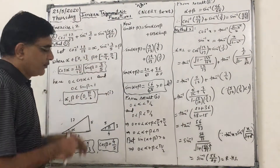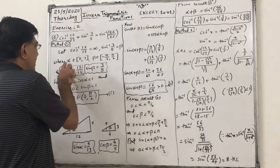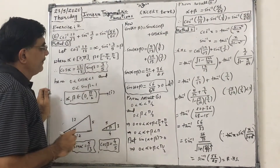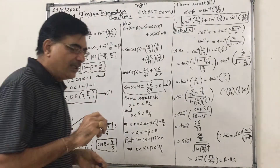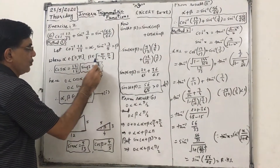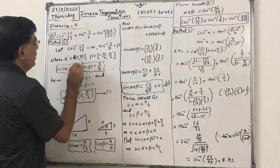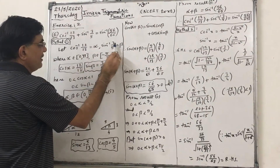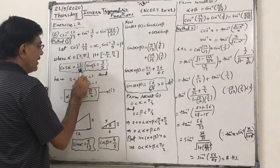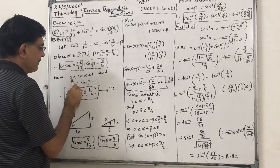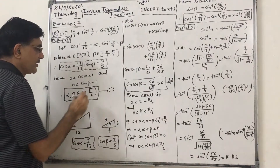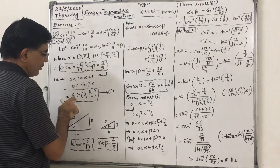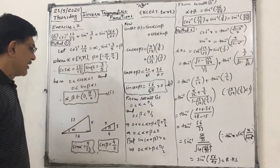That means alpha should be in the range of cos inverse, that is alpha belongs to closed interval 0 to pi. And beta must be in the range of sin inverse, so beta belongs to closed interval minus pi by 2 to pi by 2. From here, cos alpha will be 12 by 13 and sin beta will be 3 by 5. Since both cos alpha and sin beta are between 0 and 1, this is the first quadrant, so therefore alpha and beta both belong to open interval 0 to pi by 2.